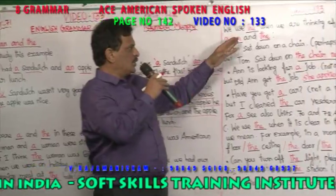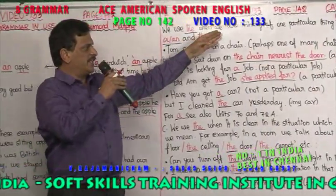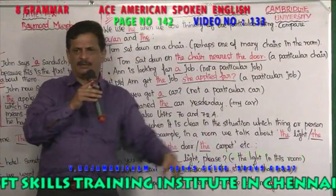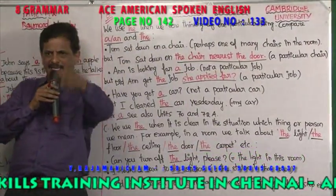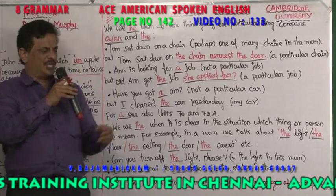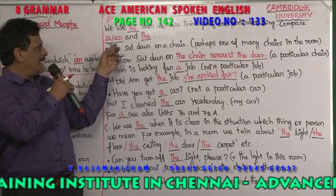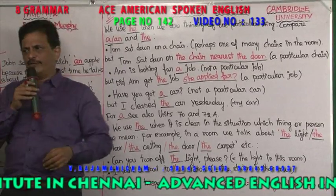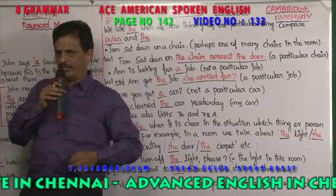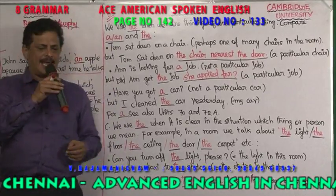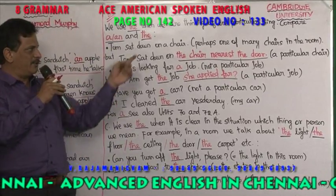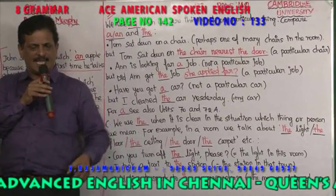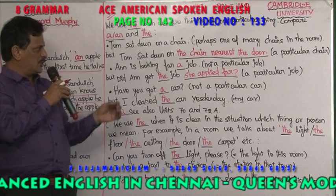We use 'the' when we are thinking of one particular thing. Only one thing is there — there you are using 'the'. Compare A and THE: when you want to mention about one particular thing, there you are using 'the'.